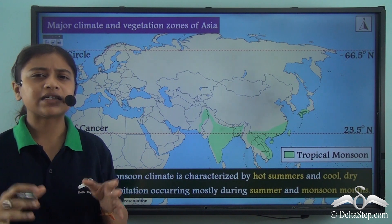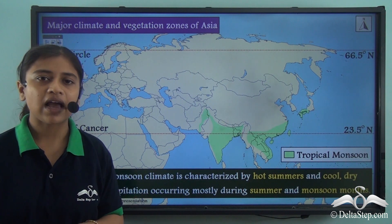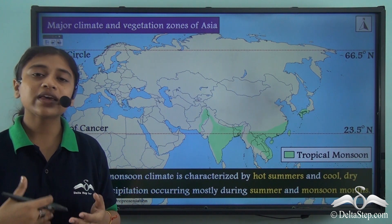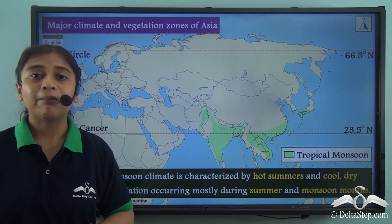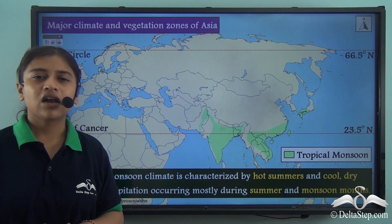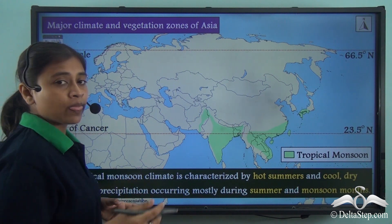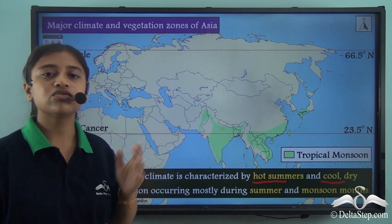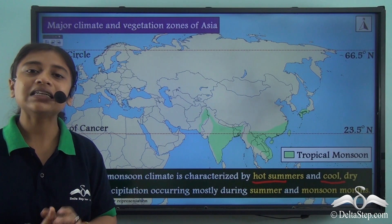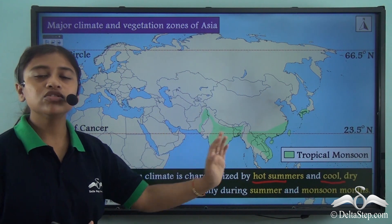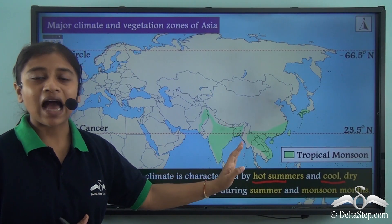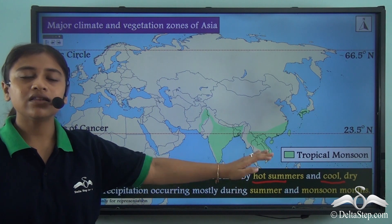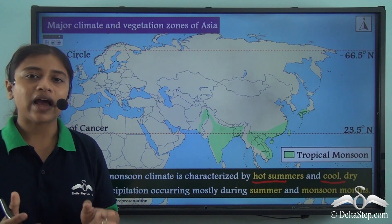Asia's rainfall pattern is influenced by a number of factors including cyclonic winds, monsoon winds, and ocean currents. Now, the tropical monsoon type of climate is characterized by hot summers and cool dry winters. Regions experiencing this climate receive precipitation during the monsoon and summer months, and the tropical monsoon climate brings heavy rainfall in the southern parts of the continent.